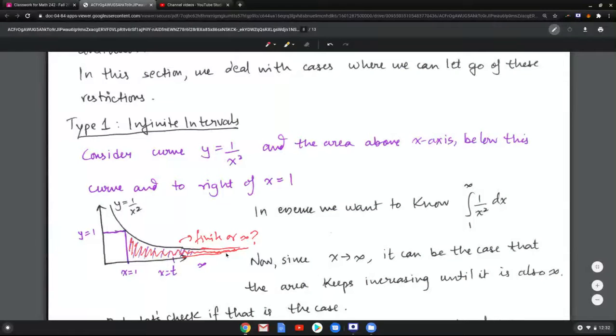Now one could argue that it depends on how close it gets to the x-axis, so it's very hard to say what is happening here and we have to do an analysis. Now area is the same as finding the integral, so in a sense what we want to know is what is 1 to infinity integral of 1 over x squared dx.